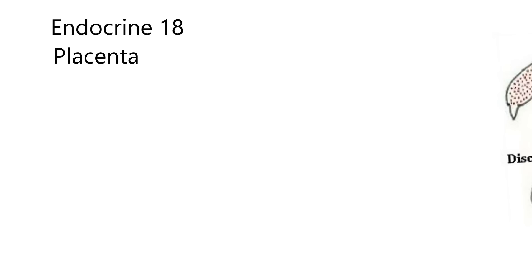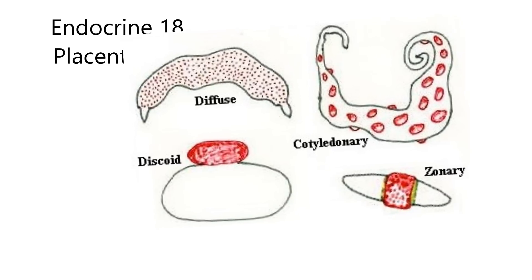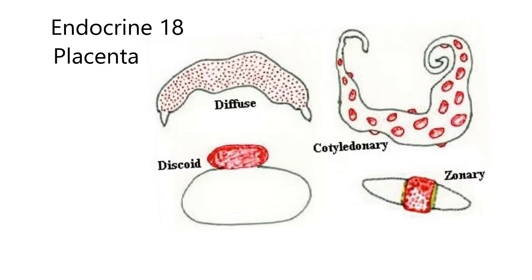Here's a nice diagram that's seen all over the world. It's got the four types of placentas. The categories are more complicated than this — it depends on the layers between the blood supplies of the mother and the fetus — but here are four ways to classify placentas.